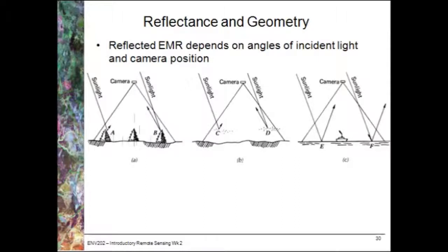Because the tree on the right-hand side, for example, the camera is viewing the sunny side of the tree. Whereas on the left-hand side, it's viewing the shady side of the tree. So this also affects different features like water bodies and atmospheric haze.